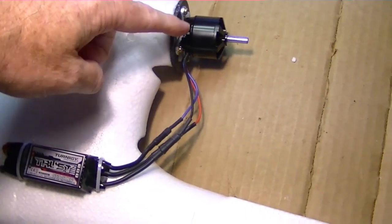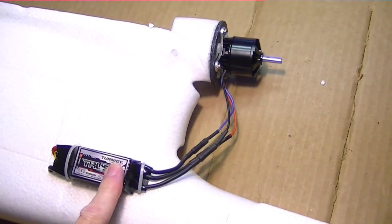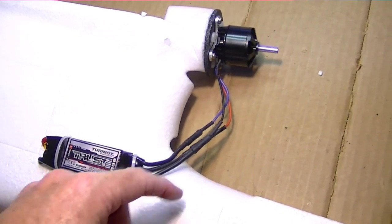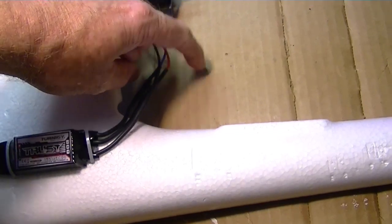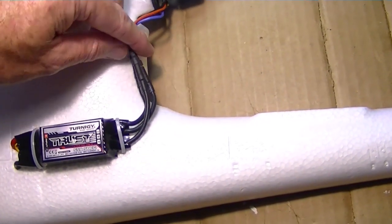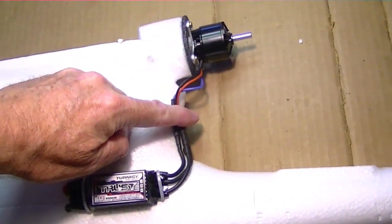So there is the motor and the electronic speed control mounted on the plane, and the wires are just long enough to reach the motor. And I'll probably just fasten them down with a tie wrap later, right here.